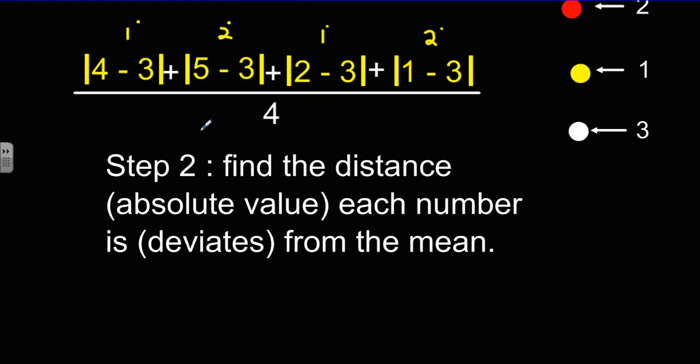And we're going to take that 6, the sum of all those distances, and divide it by 4. You can see it says here, divided by 4, because that's how many pieces of data are in the set.